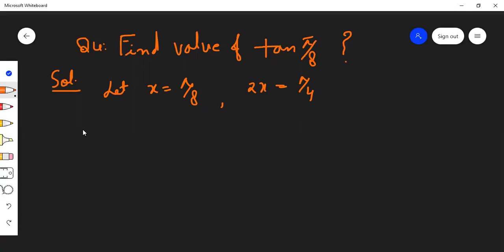Now we know the formula for tan(2x). Tan(2x) equals 2tan(x) divided by 1 minus tan²(x). We'll put the value of 2x here.